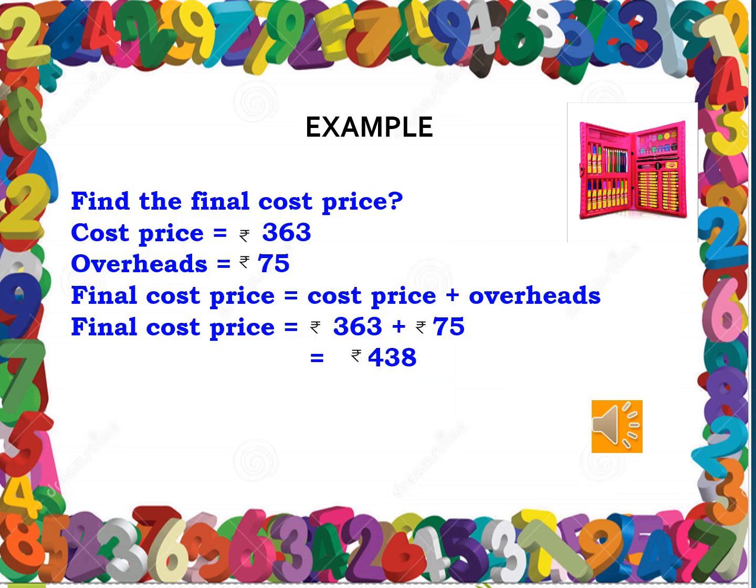Now let's learn with an example. Find the final cost price. Cost price is equal to Rs. 363 and overheads is equal to Rs. 75. Then, what is the formula to find the final cost price? Yes, we need to add the overheads with the cost price. So, final cost price is equal to Rs. 363 plus Rs. 75, which gives us the final cost price equal to Rs. 438.